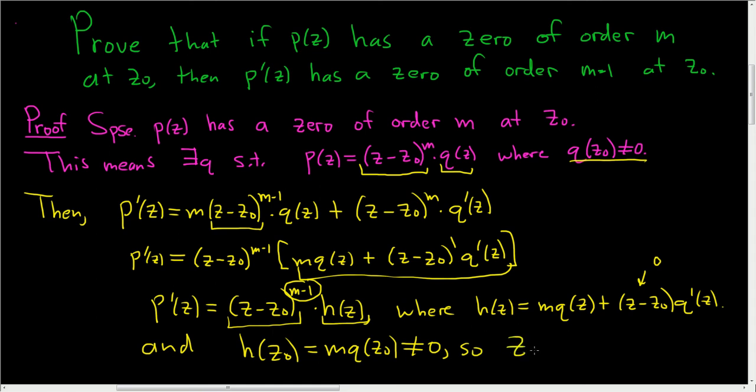So z naught is a zero of order m minus 1 of p prime of z. So I hope that made some sense. It's a pretty straightforward proof. You just write down your hypothesis, write down what it means for z naught to be a zero of order m for p. It means this.